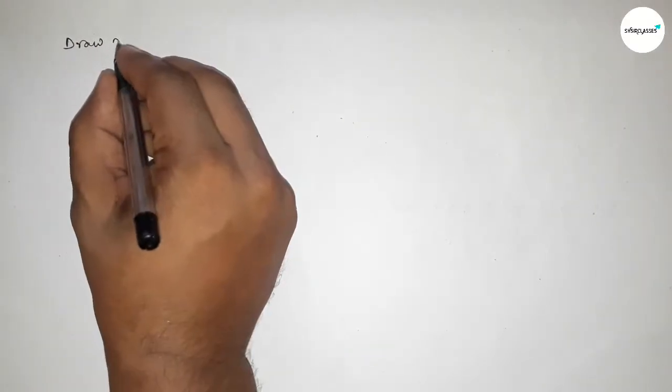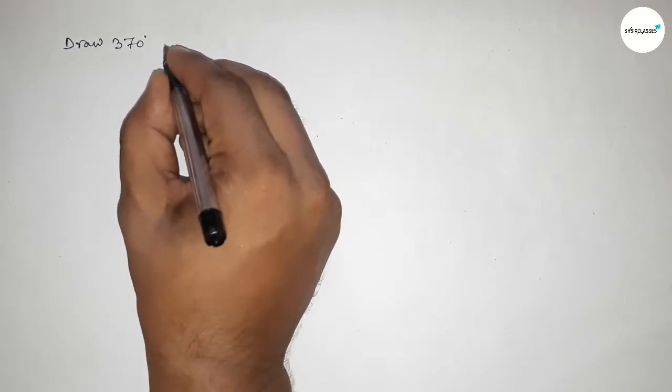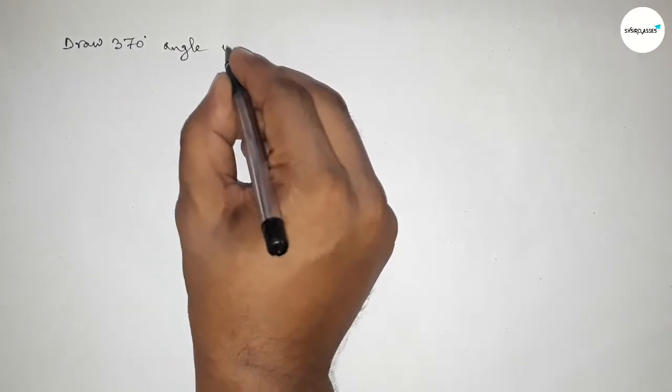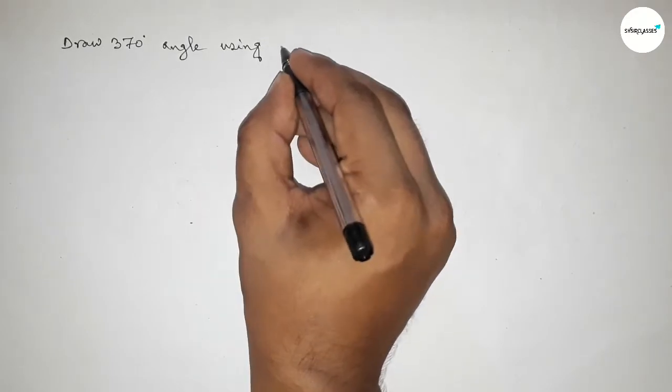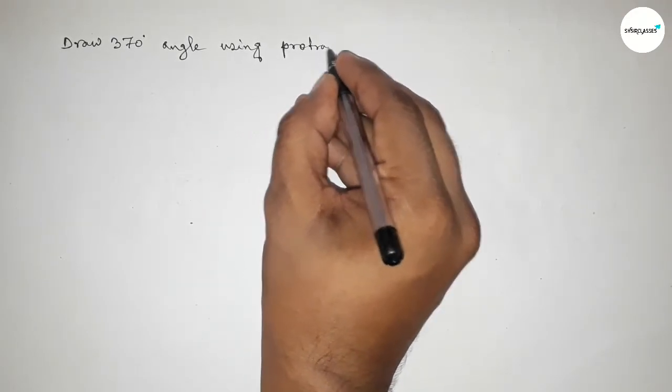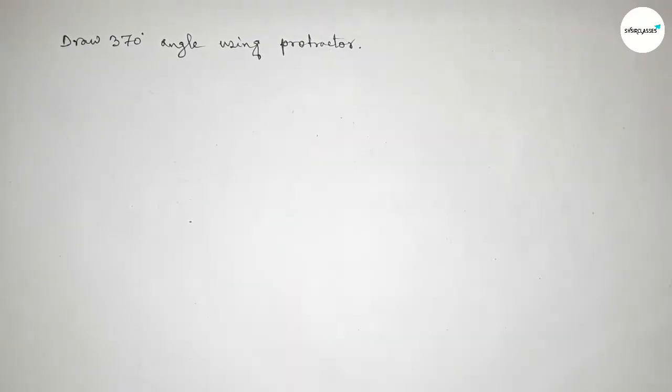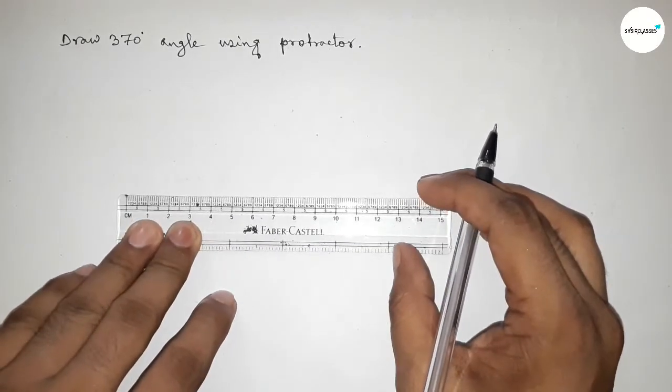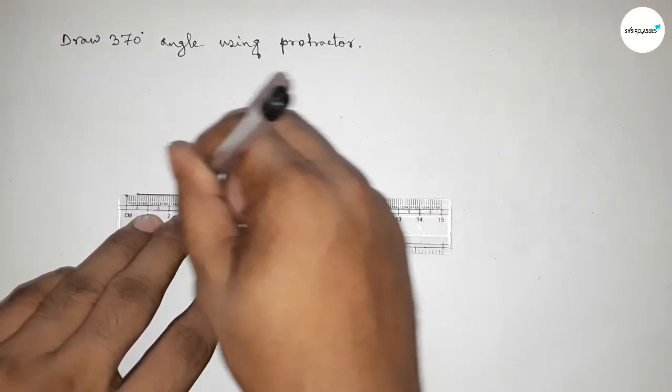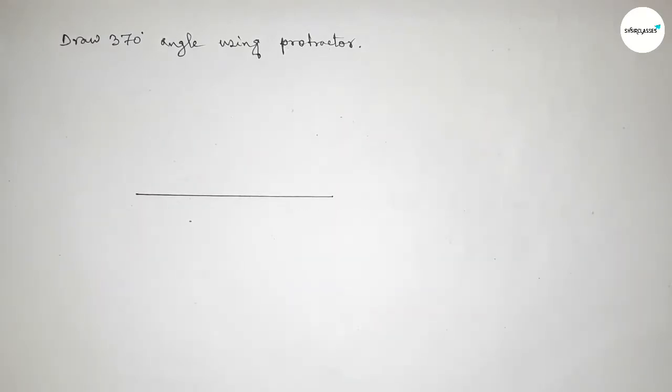Hi everyone, welcome to Syshare Classes. Today in this video, we have to draw a 370 degree angle by using a protractor. So let's start the video. First of all, we have to draw a straight line of any length.